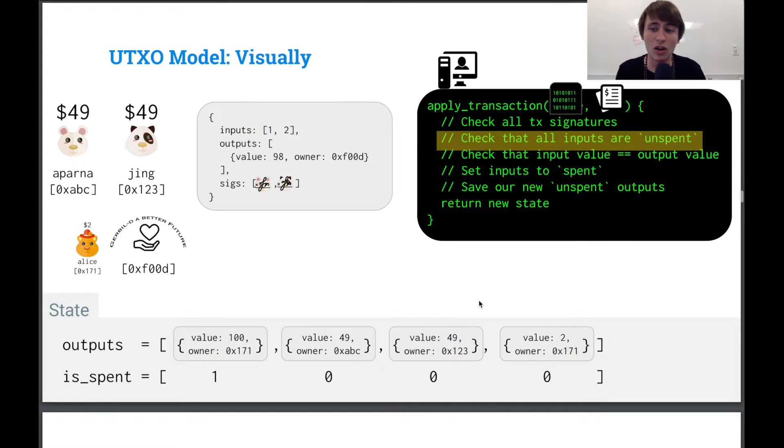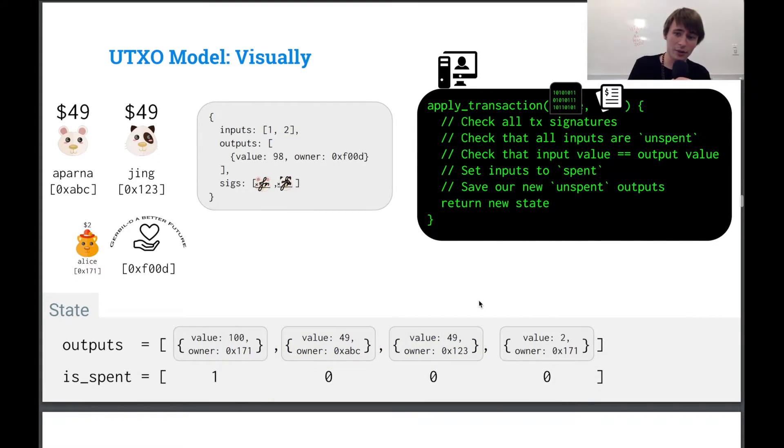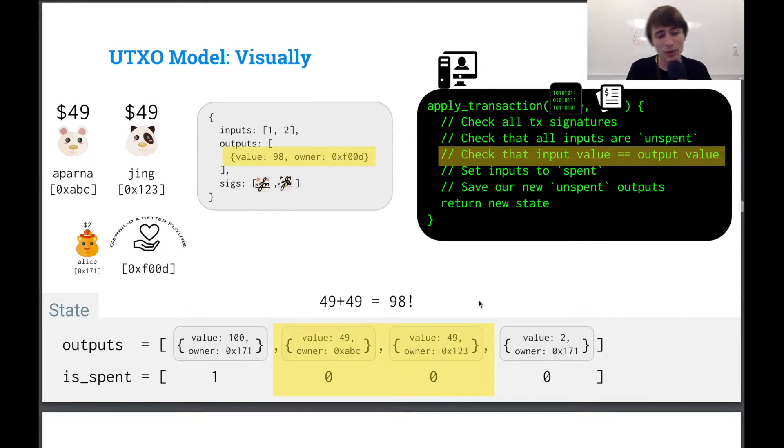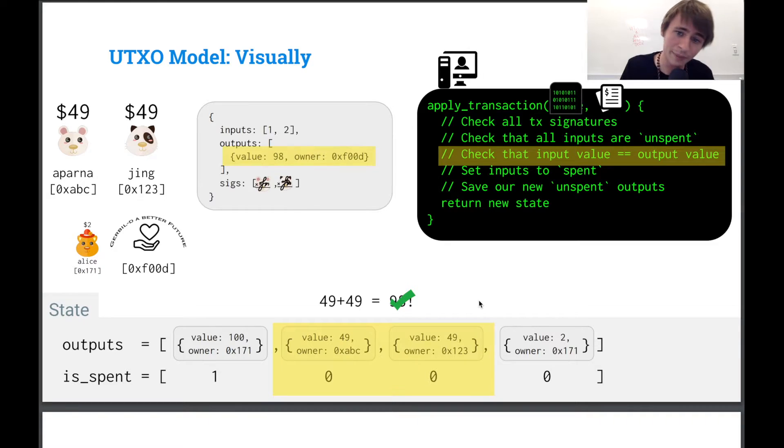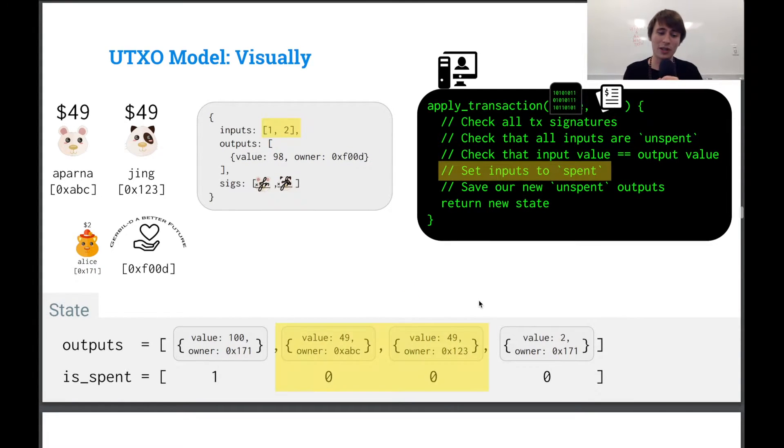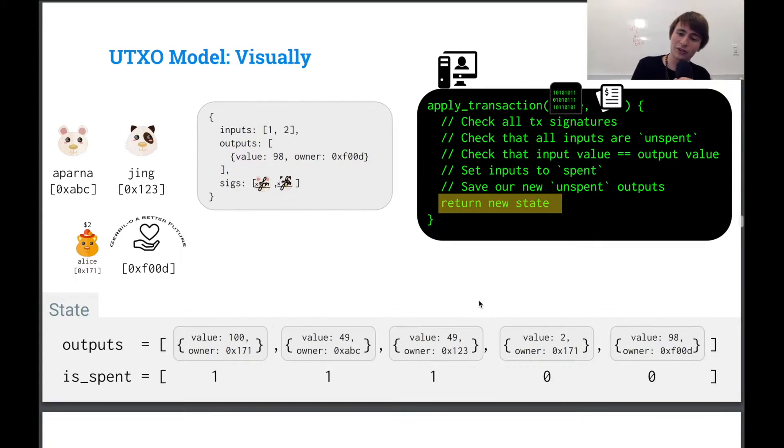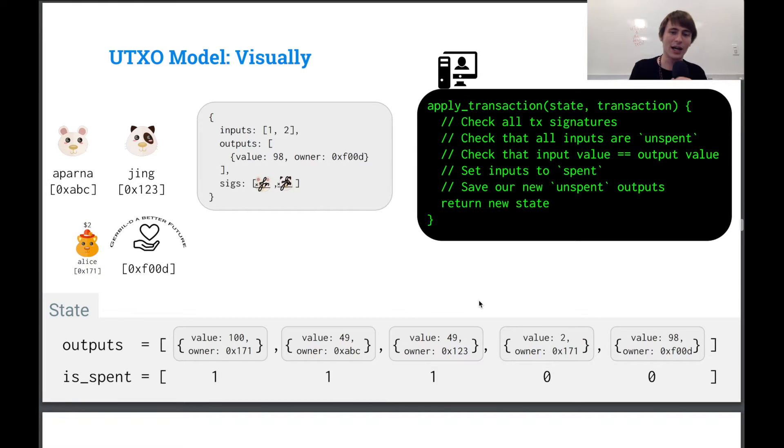Then we check that all the inputs are unspent. So we look here, they're both zero, so we're good. And then we check that the input value equals the output value. 49 plus 49 does indeed equal 98. Then we set the inputs to spent. So we update these values to one and we then save our new UTXO. Wonderful. And we return our state object.